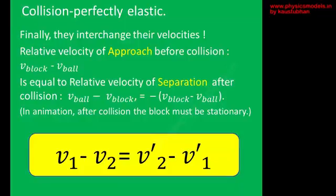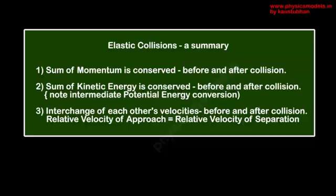What is happening here is both of these guys interchanged their velocities. The block was moving with v1. It came to a standstill. All that potential energy exchange happened. The ball moved away and it took on a velocity which is exactly equal to that of the block. So, that is what you see here, that in an elastic collision, both the objects will interchange their velocities. Therefore, the block will be stationary and the ball will start moving with the same velocity as the block's initial one.